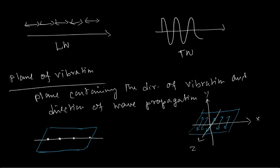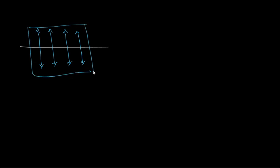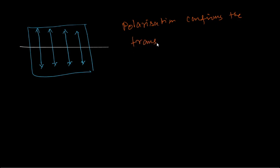We can also show the plane of vibration along the y-axis. So along the y-axis, this is also plane polarized — this is the plane of polarization. Polarization actually confirms the transverse nature of light. This is a very important point: polarization confirms the transverse nature of light.